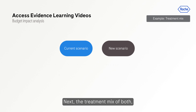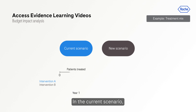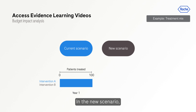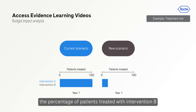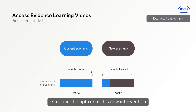Next, the treatment mix of both the current and new scenarios is modeled. In the current scenario, all patients receive Intervention A in each year. In the new scenario, the percentage of patients treated with Intervention B increases from 25% in year 1 to 75% in year 3, reflecting the uptake of this new intervention.